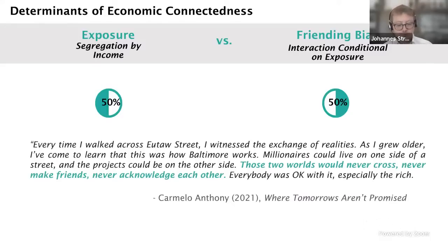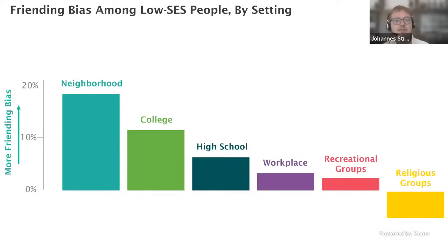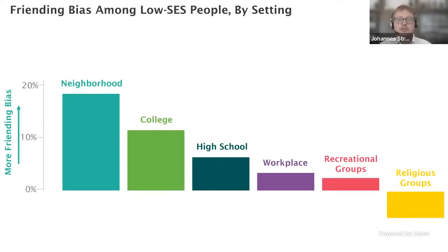In the last part of the paper, we try to understand what drives differences in friending bias across settings and institutions. We plot the average degree of friending bias by different types of social settings. Within neighborhoods, friending bias is extremely stark — even if rich and poor people live in proximity, you get very little friendship formation across these groups, exactly as Carmelo Anthony highlighted. On the other hand, in recreational groups and religious groups we find almost no friending bias — a low-income person in a given recreational or religious group is equally likely to befriend a rich or a poor peer.